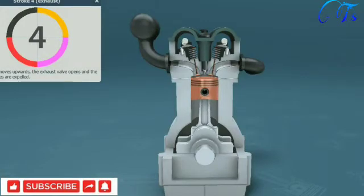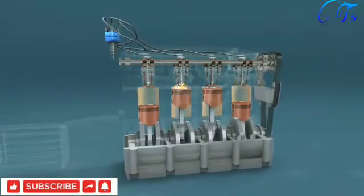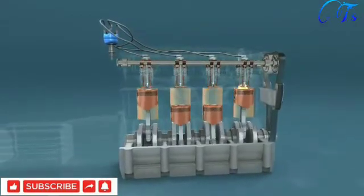The fourth stroke is the exhaust stroke. The piston moves upwards, the exhaust valve opens, and the exhaust gases are expelled. As you can see, the linear motion of the piston is converted into the rotating motion of the crankshaft.